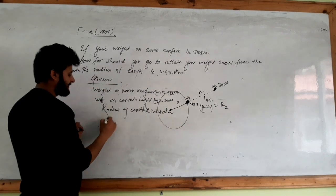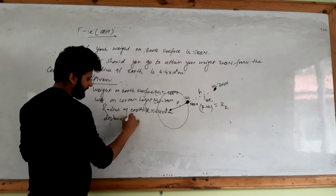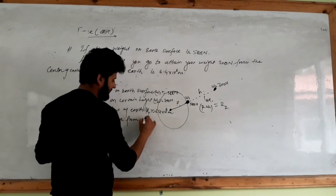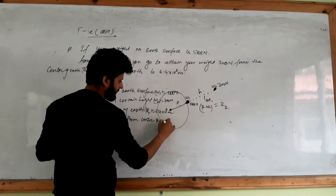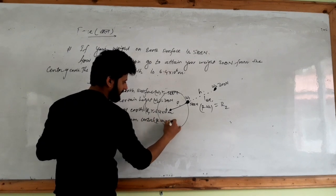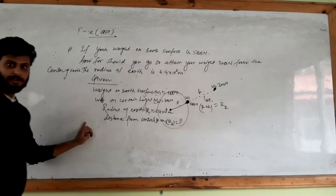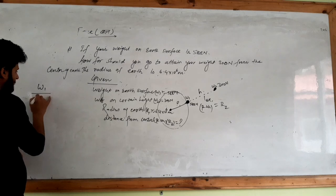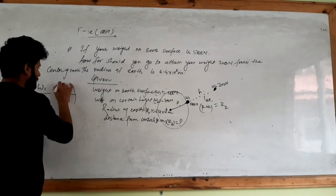We have to calculate the distance R plus H, that is R2. Using the formula: W1 over W2 equals to R2 squared upon R1 squared.